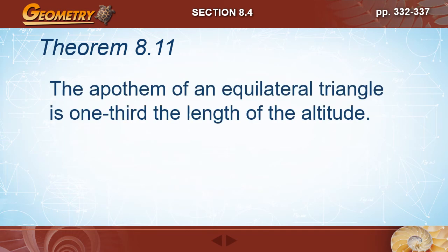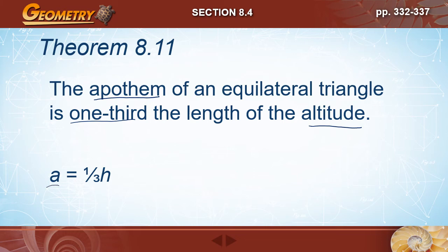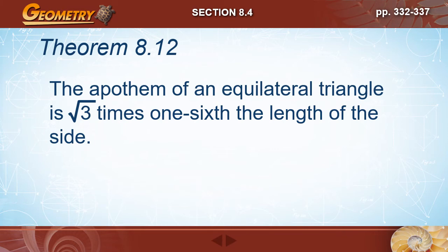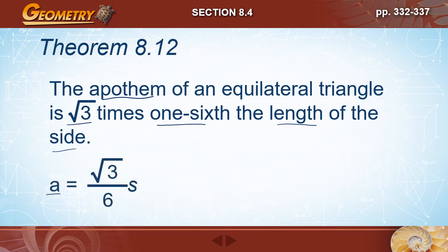Theorem 8.11 says the apothem of an equilateral triangle is one third the length of its altitude: a = (1/3)h. Theorem 8.12 states the apothem of an equilateral triangle equals (√3/6) times the side length. You don't need to memorize these — just have them written down for reference.